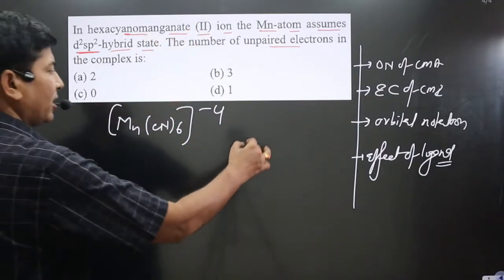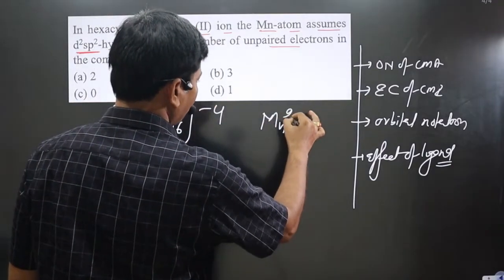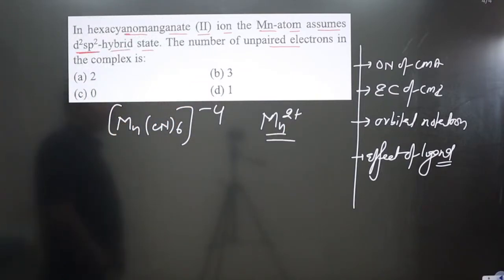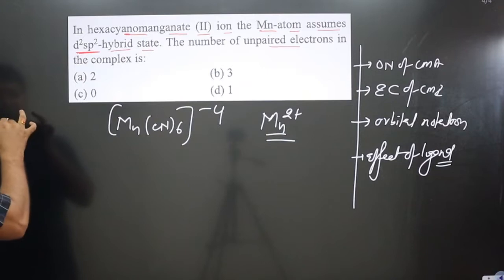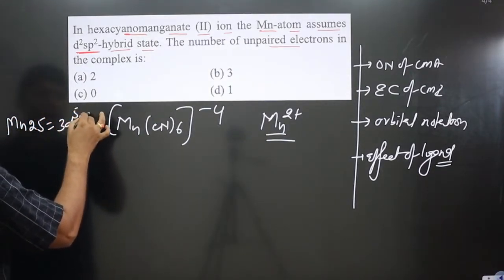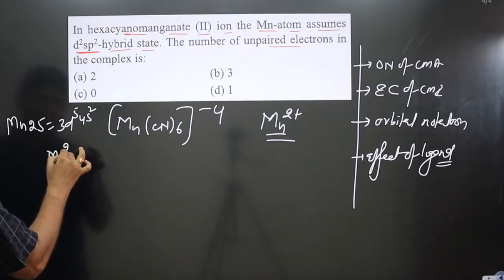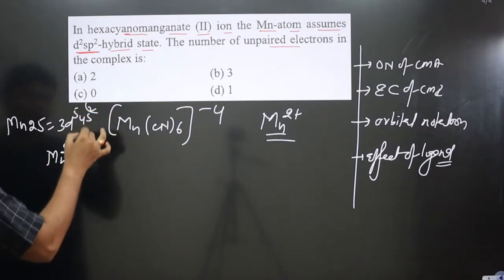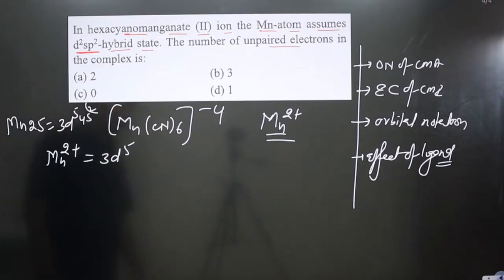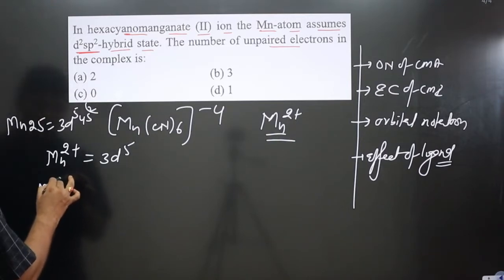Now we calculate the oxidation number of central metal atom—already given in the question, manganese is present in +2 oxidation number. Now we write electronic configuration of central metal atom. Manganese atomic number is 25, outermost electronic configuration 3d⁵ 4s². For Mn²⁺ we have to write electronic configuration—losing two electrons, then it will be 3d⁵.